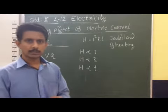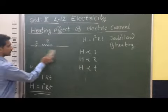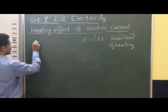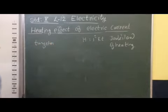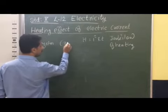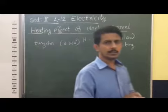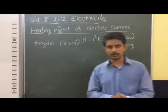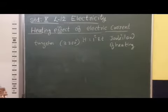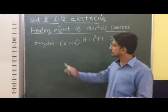When we consider Joule's Law of Heating, there are many practical applications in our daily life. For example, in the case of a filament bulb, the filament is made of tungsten, which has a very high melting point of approximately 3,380 degrees Celsius. When current passes through the filament, which has high resistivity, it gets heated, and that heat energy is converted into light energy.